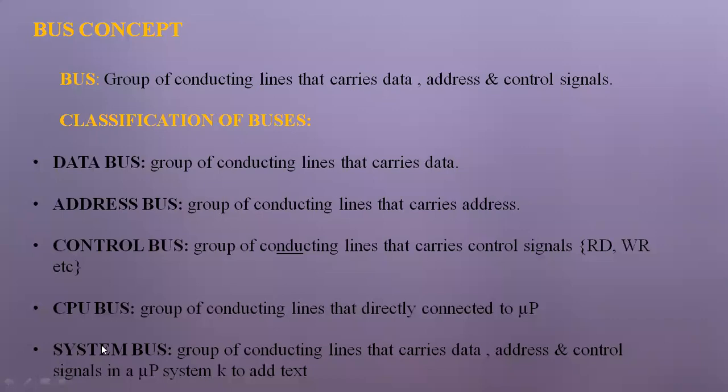The first part of the architecture is the bus. A bus is a group of connecting lines that carries data through the data bus, addresses through the address bus, and control signals through the control bus, used for reading and writing data. Read means to read data from IO or memory devices to the microprocessor, and write means to carry the output back to IO or memory devices.